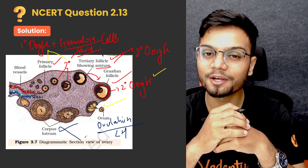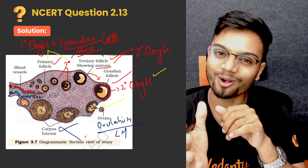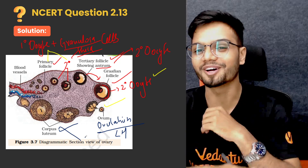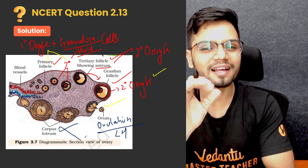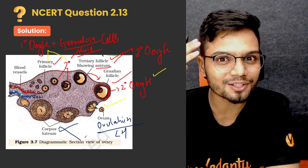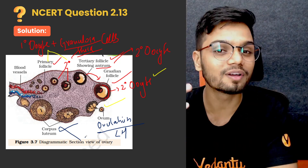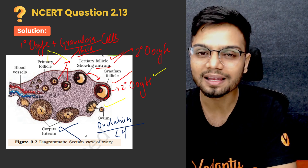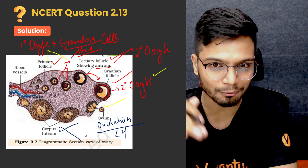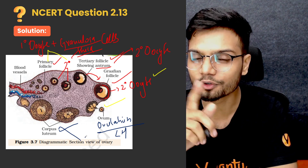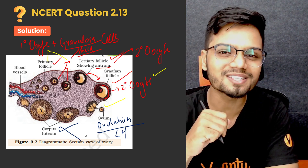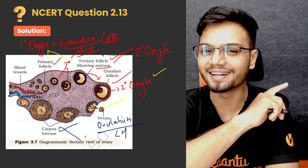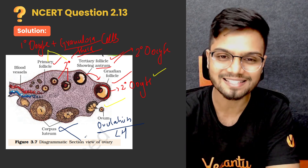If the endometrium is destroyed, bleeding happens — and that's how menstruation takes place. So I just explained to you menstruation and also the structure of the ovary all together. If you like the content and how we connect things, like the video and subscribe to the channel. Until next time!